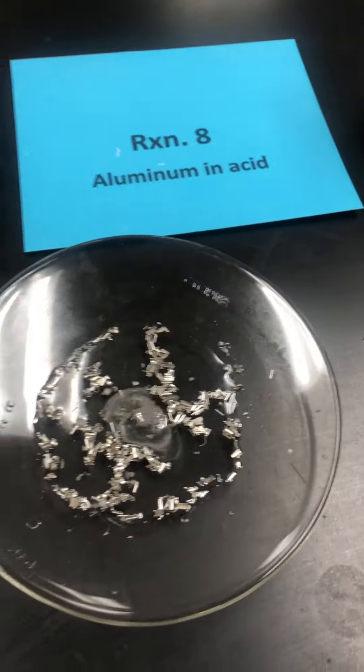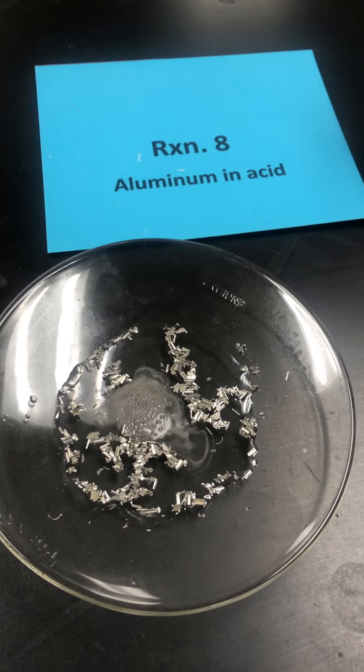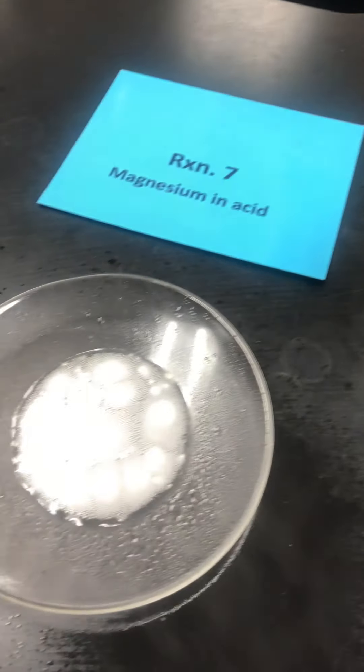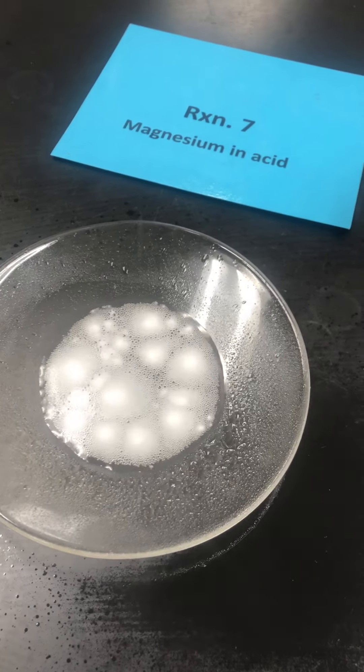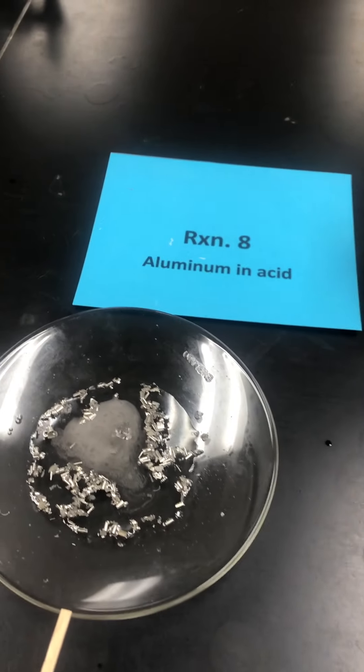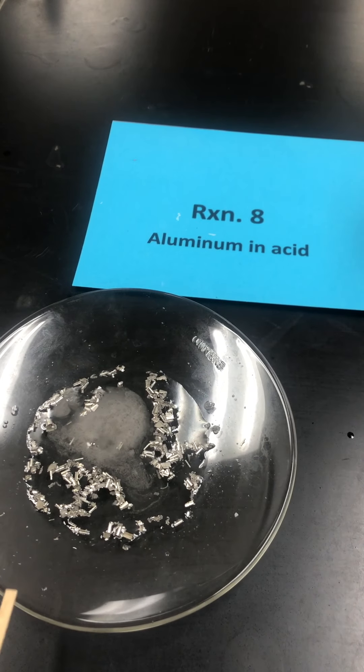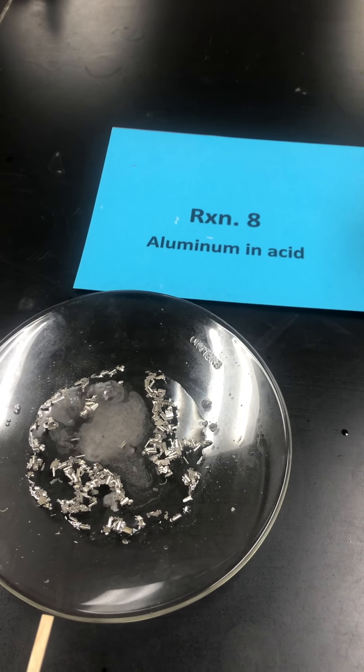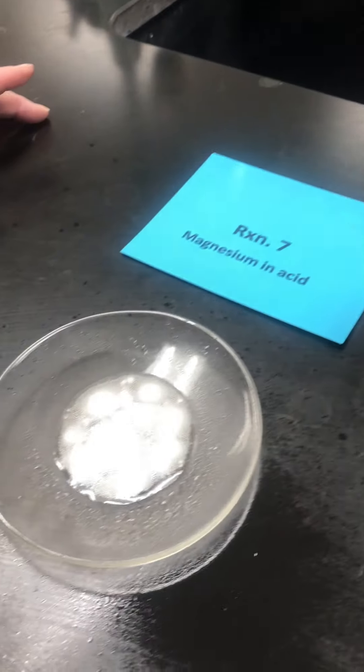Now the first reaction, magnesium, was quite impressive. It bubbled up and caused a mess on the lab table. Notice that the aluminum took a little bit longer. There's a difference in reactivity of magnesium and aluminum, but both eventually are reactive.